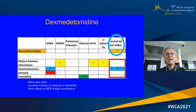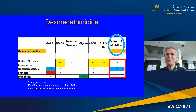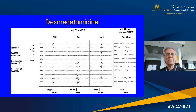Dexmedetomidine acts on central alpha-2 receptors, working only to create unconsciousness and some pain relief, but provides no amnesia whatsoever and no immobility. This drug is quite different from the other two. At higher doses, dexmedetomidine can affect evoked potentials and we have to be careful, though at lower doses in the first hour, the effect is probably minimal.